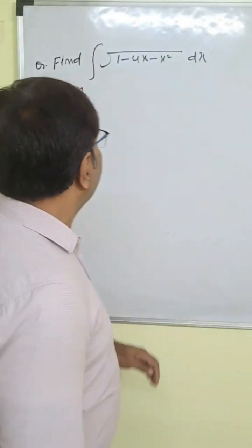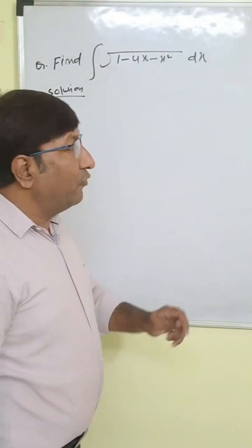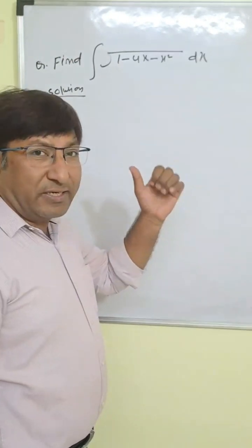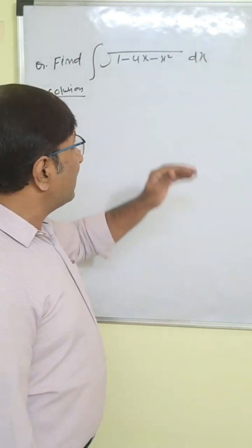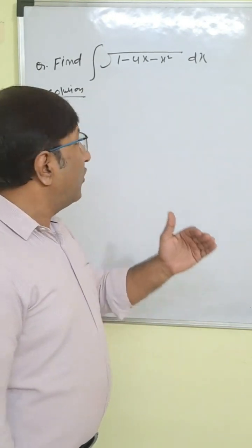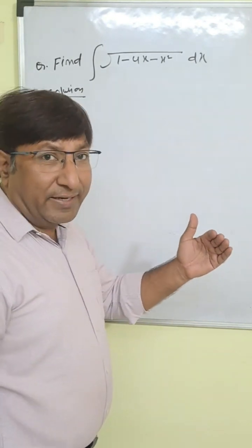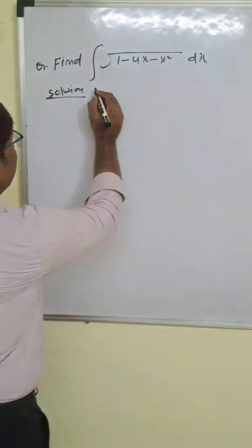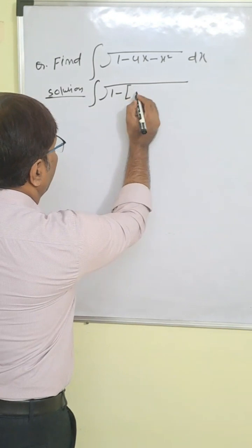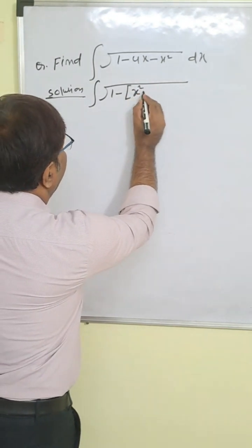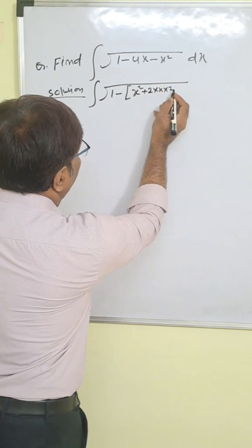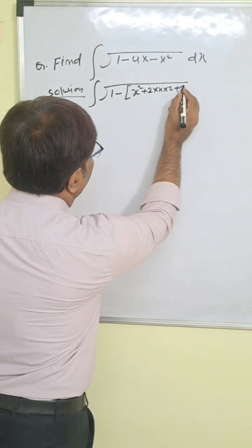Find integration of root under 1 minus 4x minus x square dx. For this type of question the simple technique is: first you convert this number to root under a square minus x square form. So here integration root under 1, and then minus is common, so we write x square plus 4x. That is 2 times x times 2, so b is 2.